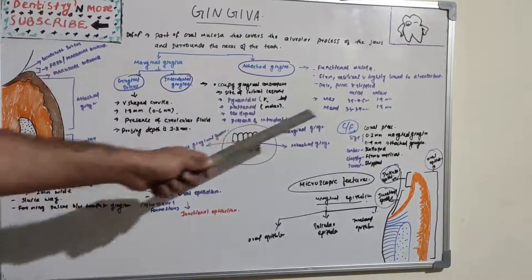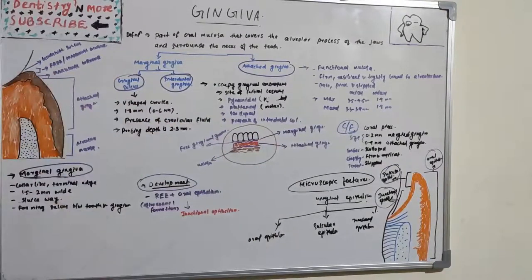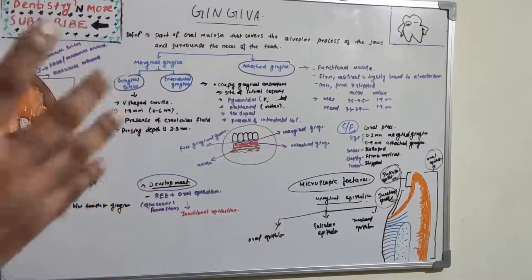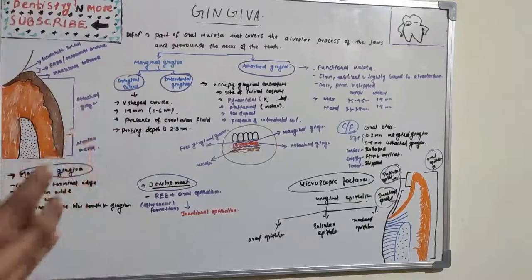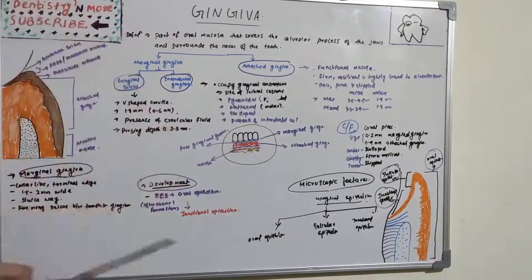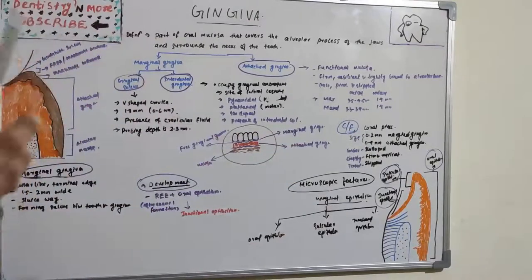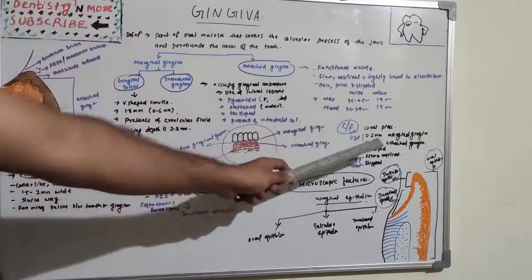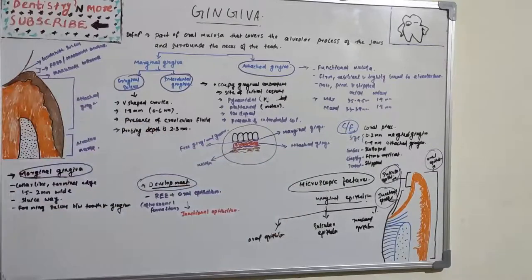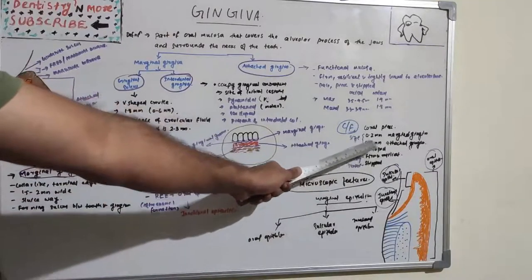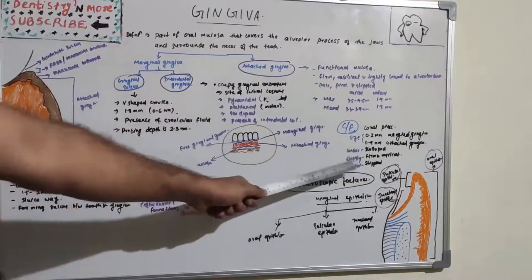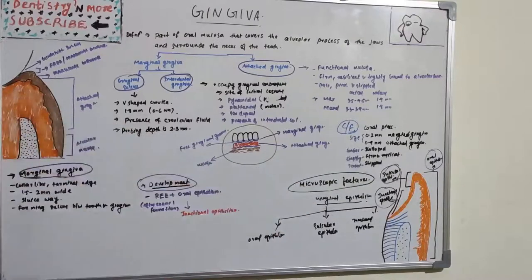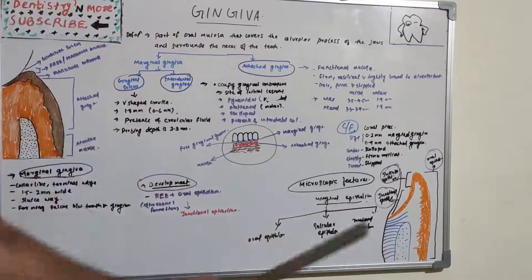The clinical features of Gingiva: the basic color is coral pink — the pink color seen in coral reefs at the seaside, which is why it has that peculiar name. The size is 0 to 2 mm for marginal Gingiva and 0 to 9 mm for attached Gingiva. The contour is scalloped, with firm and resilient consistency and a stippled texture.